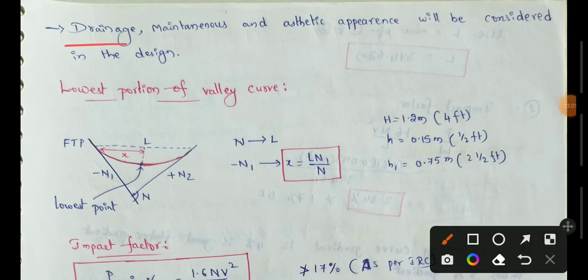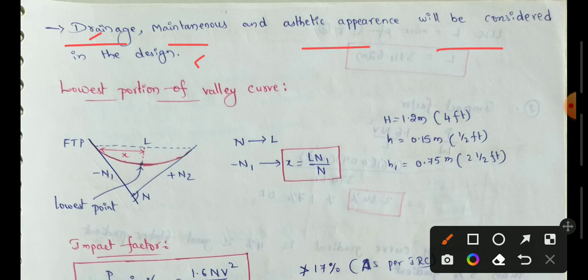We also discuss cross-drainage control at the lowest point of the valley curve, which involves drainage maintenance and aesthetic appearance — both are considered in the design criteria. Those are the complete design criteria for valley curves. If you like this video, please like and subscribe to the channel. Thank you for watching.